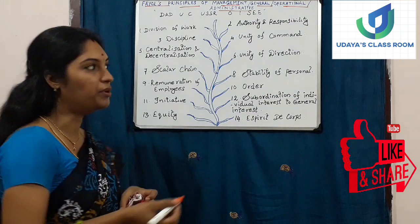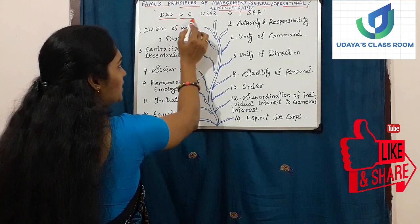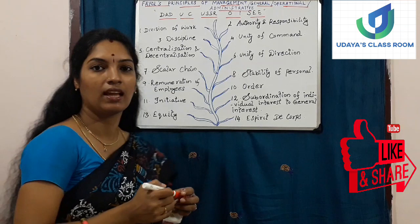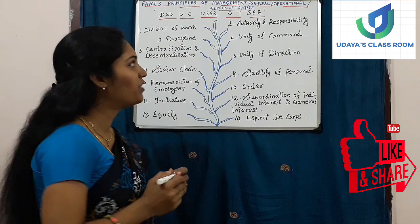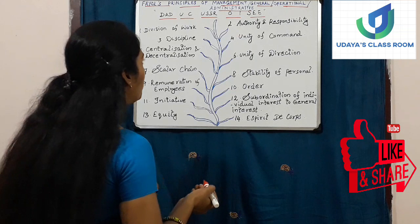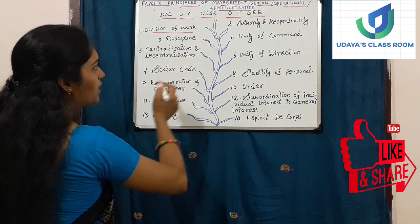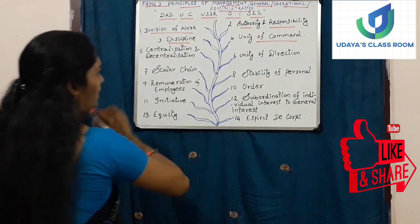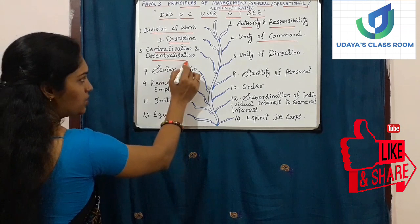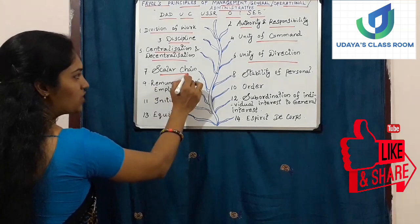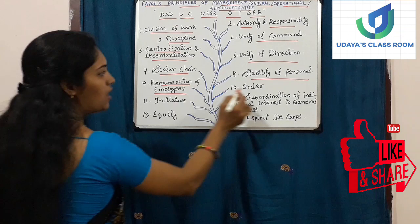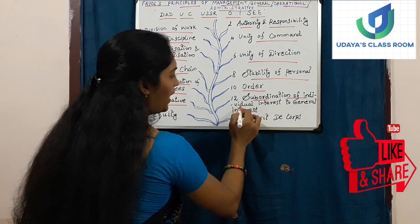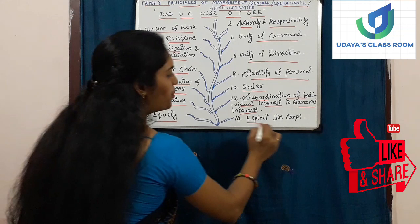These 14 principles are commonly abbreviated with a mnemonic to help remember all 14 subheadings. The first principle is Division of Work, the second is Authority and Responsibility, the third is Discipline, the fourth is Unity of Command, the fifth is Centralization and Decentralization, the sixth is Unity of Direction, then Scalar Chain, Stability of Personnel, Remuneration of Employees, Order, Initiative, Subordination of Individual Interest to General Interest, and Equity.